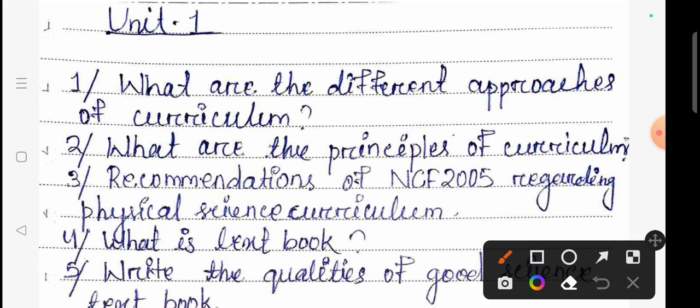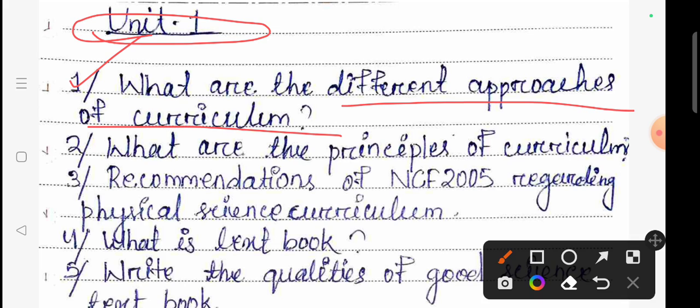If you have a small question in our exam, there are many chances - 90 to 95% chance. In Unit 1, the question is important: What are the different approaches of the curriculum?